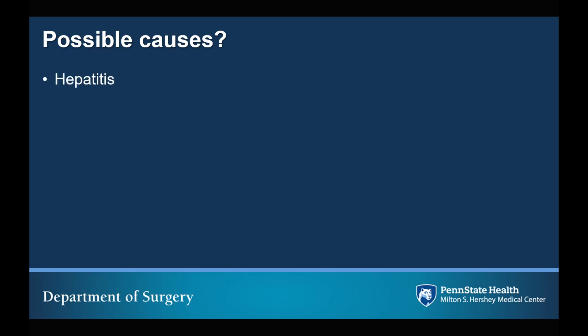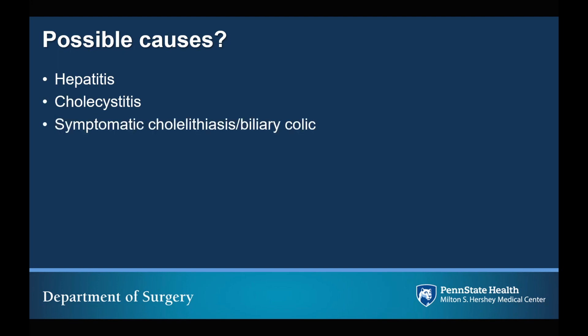Of course, hepatitis can be a cause of right upper quadrant abdominal pain. The gallbladder lives there, giving us cholecystitis as well as symptomatic cholelithiasis and biliary colic. Cholangitis can also cause right upper quadrant abdominal pain. Pancreatitis, although it is often associated with epigastric pain, can present with right upper quadrant abdominal pain.